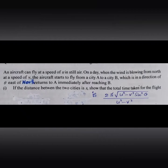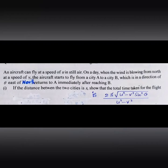That is the standard element — velocity with respect to the earth. In still air, the velocity of the aircraft is the relative velocity with respect to wind. They have given the magnitude u but they haven't mentioned the direction. So it can be in any direction.